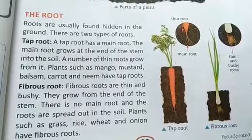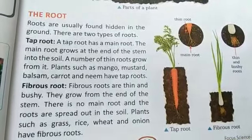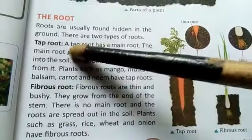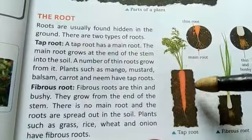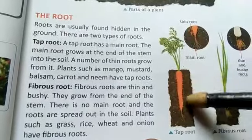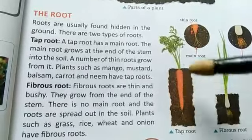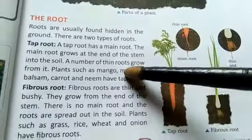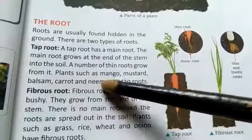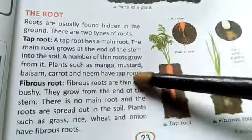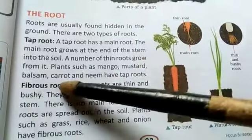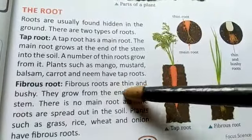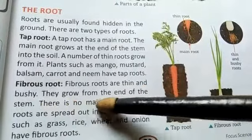The root is found just below the ground. Roots are divided into two types: taproot and fibrous root. Taproot has one main root. You can see the picture of a carrot — one main root with many tiny hair-like structures growing around it. Plants such as mango, mustard, balsam, carrot, and neem have taproot.